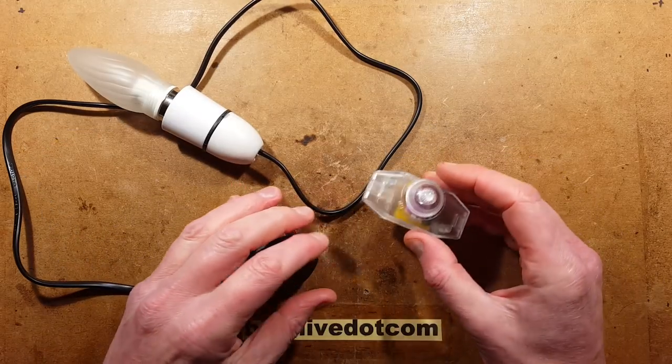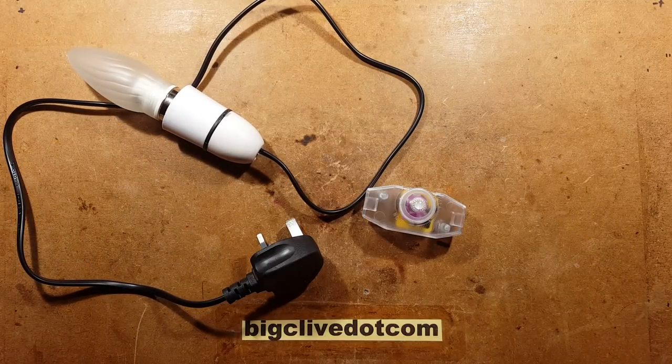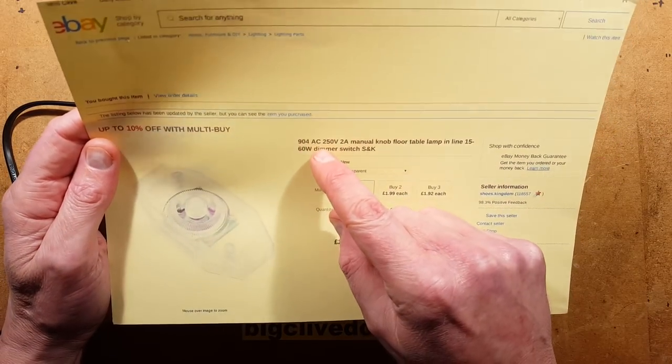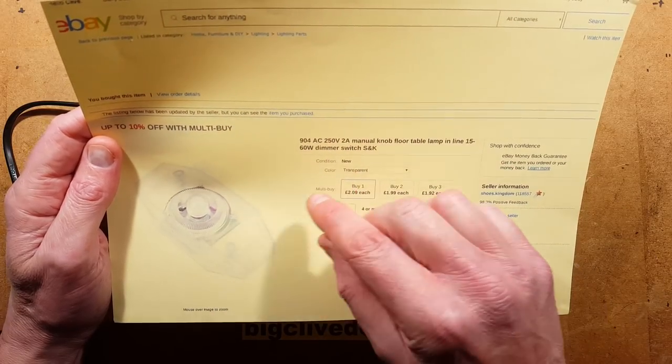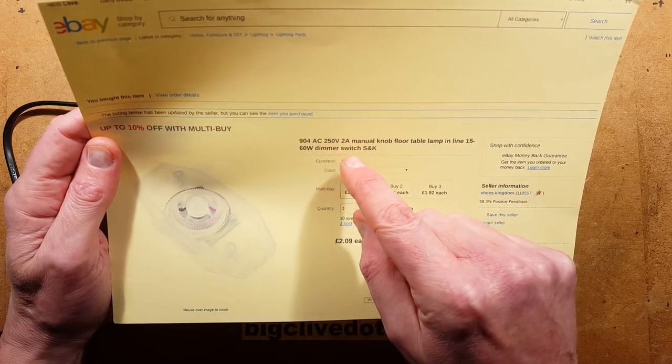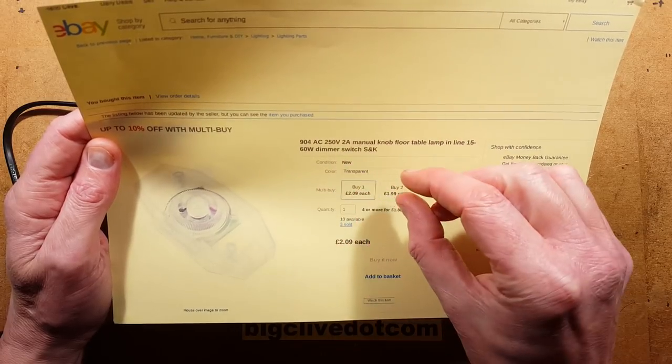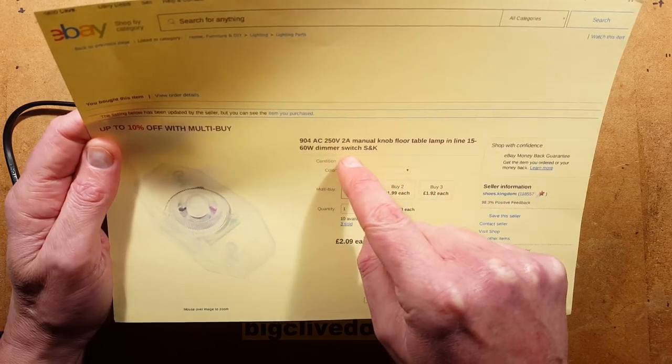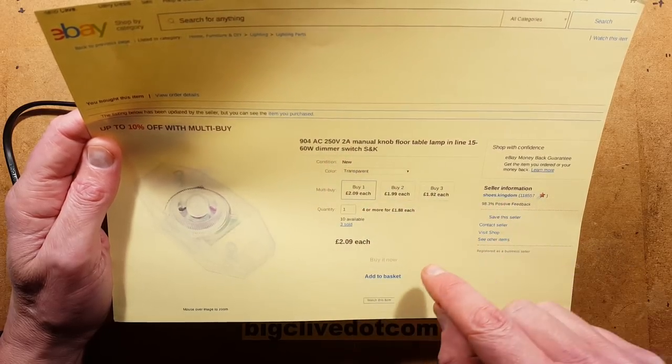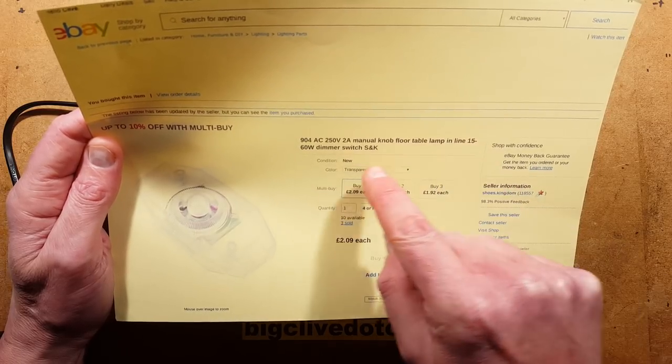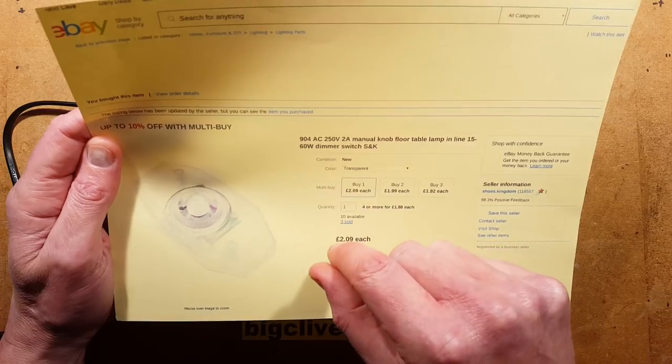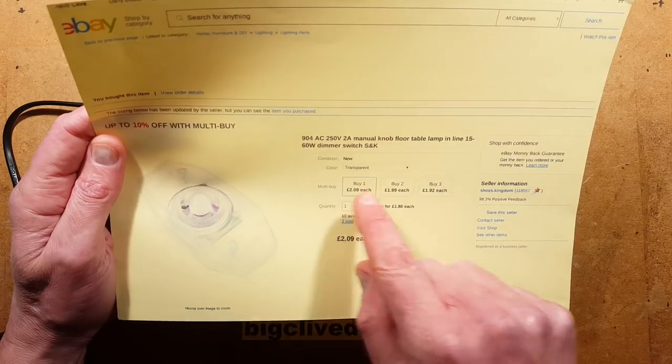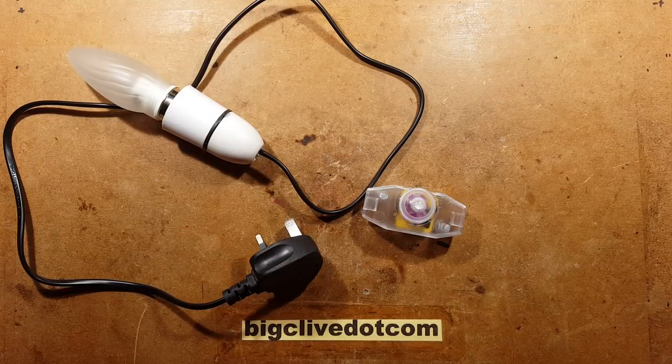A dimmer from eBay. Let me show you the listing this came from. So it's listed as 904 AC 250 volt. There's probably a slight component variation available for the 120 volt version, 2 amp, which seems quite generous given it's got a tiny little track in it. Manual knob floor table lamp inline 15 to 60 watt dimmer switch. And I got the transparent one because the transparent one looks the best.